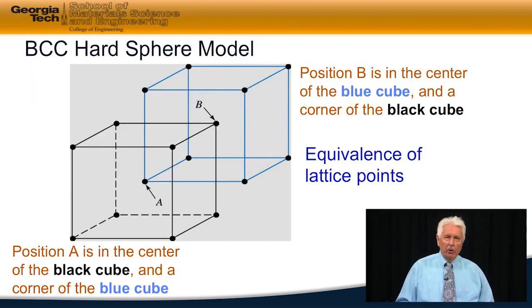An alternative way of looking at the BCC structure is that we can consider the BCC as two interpenetrating lattices, an A lattice and a B lattice, but in order for our points to be lattice points, A and B have to be equivalent. Whatever the surrounding environment around A is, it has to be the same around B.